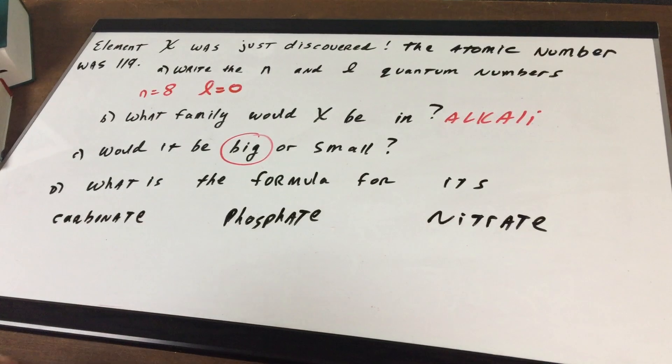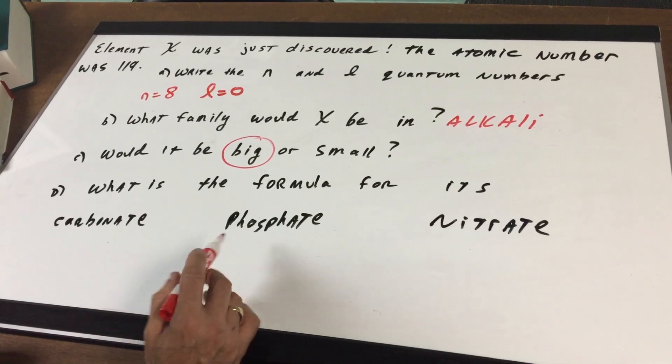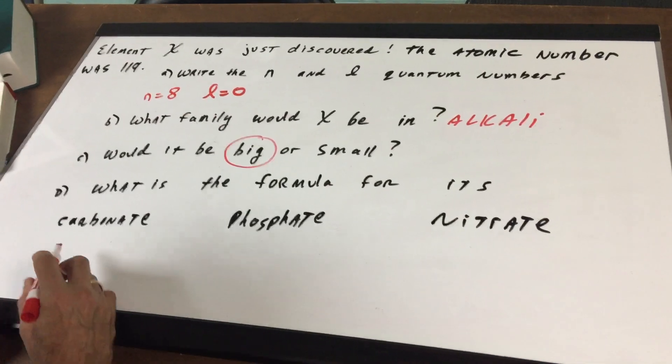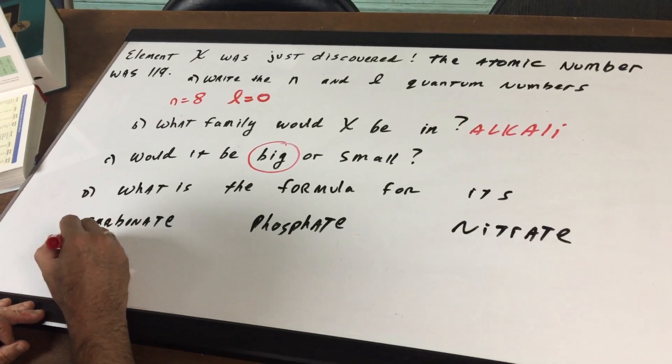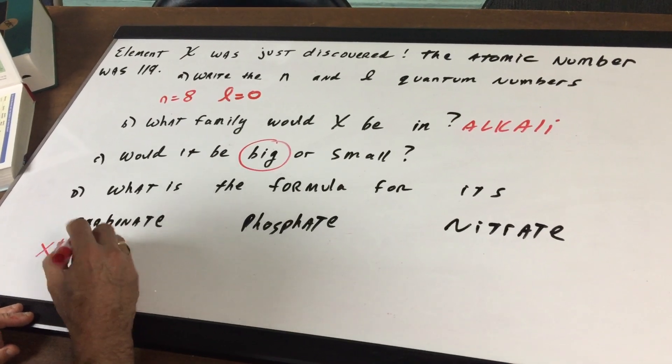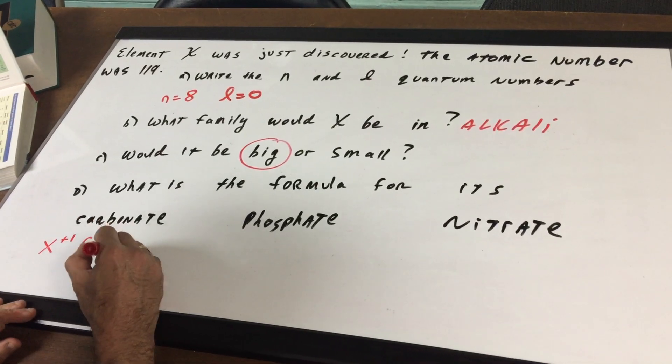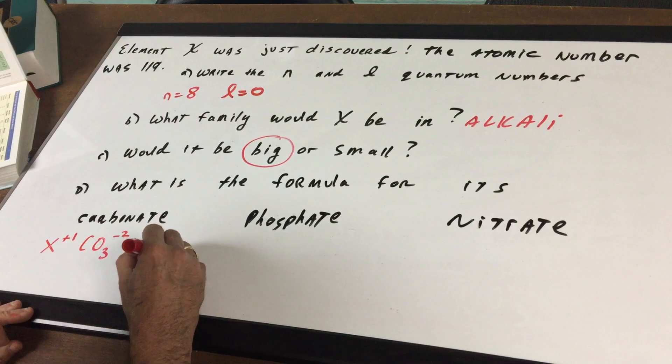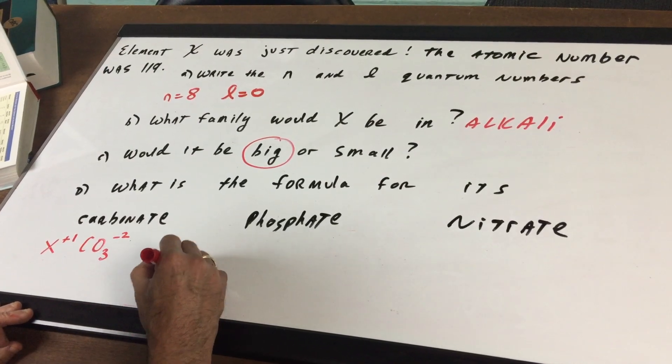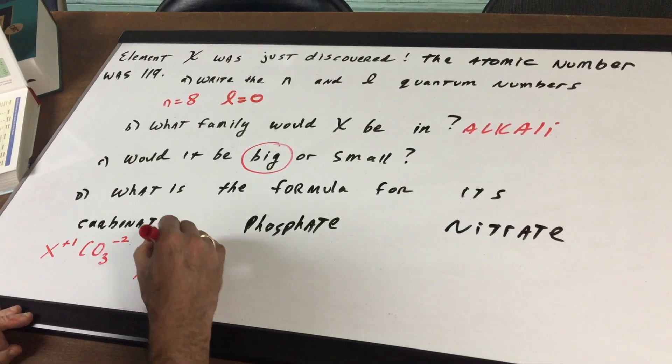What would be the formula for its carbonate, phosphate and nitrate? Well, we all know that the charge in group 1 is plus 1, so this X would be plus 1. We know carbonate is minus 2 so you simply crisscross and you would get an X2CO3.